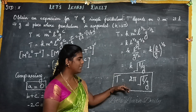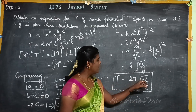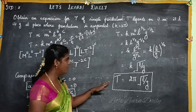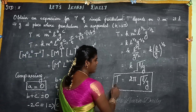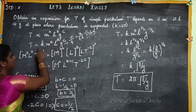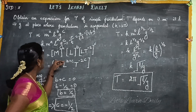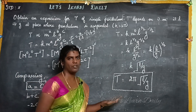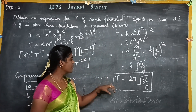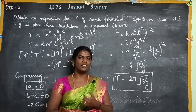If you look at the final result, the mass value does not appear — the time period of a simple pendulum does not depend on mass. It depends only on the length and the acceleration due to gravity. So the final equation is T = 2π√(L/G). This is how dimensional analysis lets us establish relationships between physical quantities. Thank you.